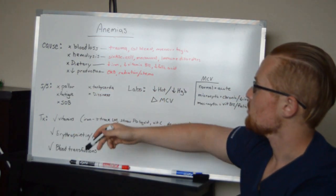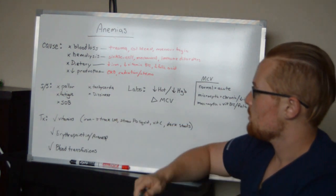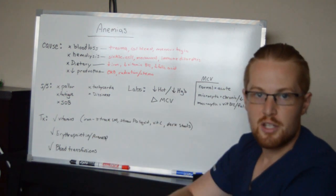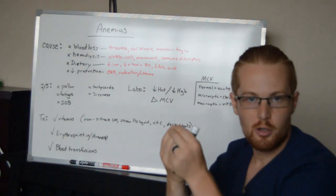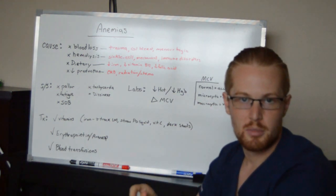Some signs and symptoms general for anemia would be pallor, which is the patient's going to be pale and their nail beds and their mucous membranes are going to be a little bit pale.